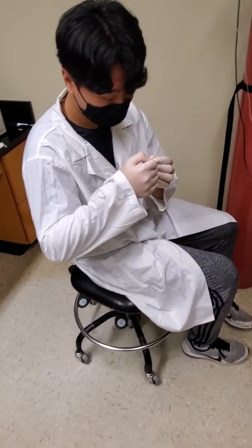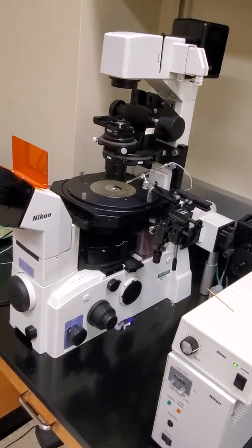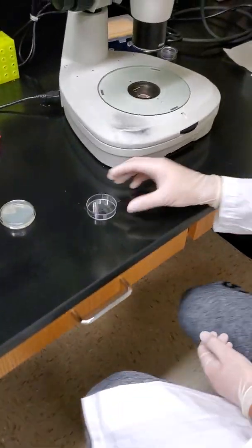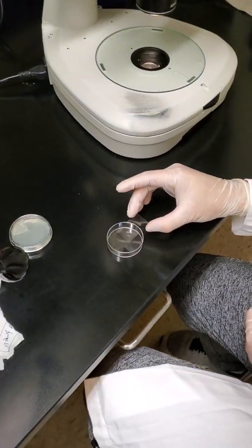And so after we're done flinging the needle, we're going to center it under the light in the microscope just to get it ready for the injection. Okay, so in order to focus the microscope on the needle, we're going to prepare our agarose slide.